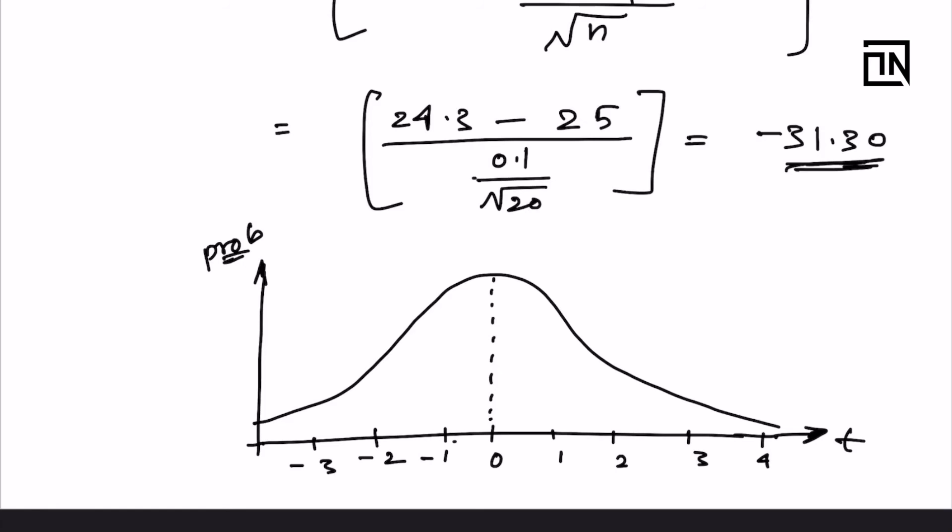You expect that the t-value which you're getting, if it is around 0, then the probability of getting such a value is very high. If you're getting a t-value which is very far away from 0, either on the negative side or the positive side, then the probability of getting such a value will be very low. In this example, we're getting minus 31.30, which will come out somewhere over here, very far away from 0.